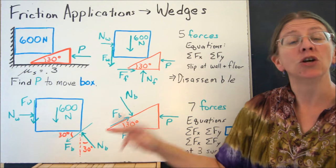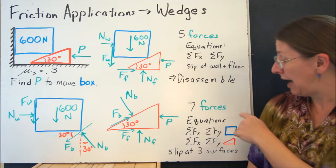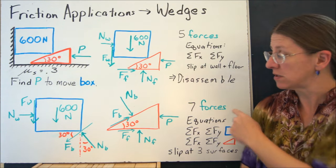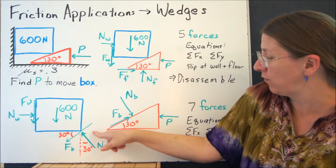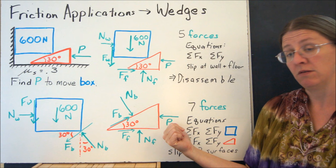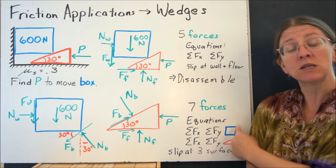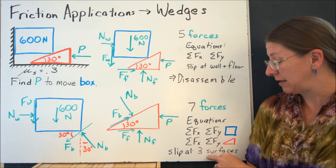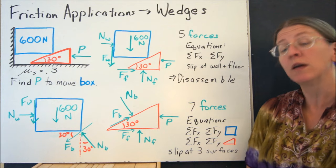Because I only added two new variables, I now have seven total forces. One, two, three, four, same, five, six, seven. Seven forces with these two equations of equilibrium and the slip at three places will give me what I need to know.